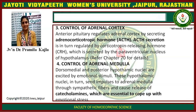Control of the adrenal cortex: the anterior pituitary regulates the adrenal cortex by secreting adrenocorticotrophic hormone (ACTH). ACTH secretion is in turn regulated by corticotropin-releasing hormone (CRH), which is secreted by the paraventricular nucleus of the hypothalamus. Control of the adrenal medulla: the dorsomedial and posterior hypothalamic nuclei are excited by emotional stimuli and send impulses to the adrenal medulla through sympathetic fibers, causing release of catecholamines essential to cope with emotional stress.